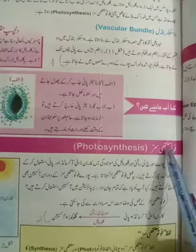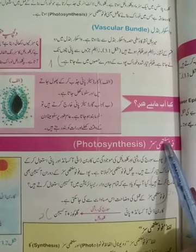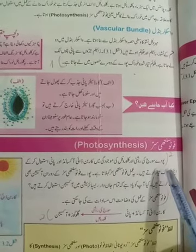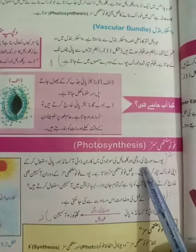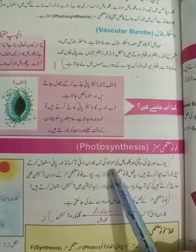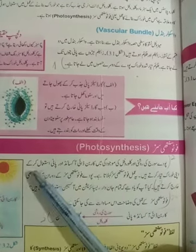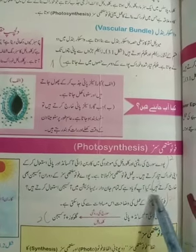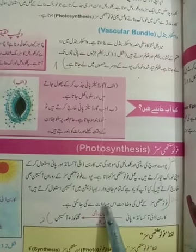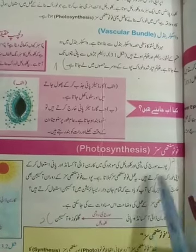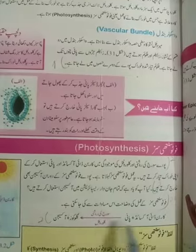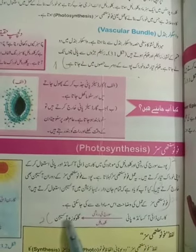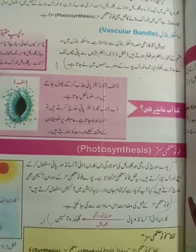آج کے لیسن میں ہم نے دیکھا کہ photosynthesis کیا ہے۔ Photosynthesis وہ عمل ہے جس میں پودے سورج کی روشنی اور chlorophyll کی موجودگی میں کاربن ڈائیکسائیڈ اور پانی استعمال کر کے اپنی خوراک تیار کرتے ہیں۔ اور پھر ہم نے اس کو equation کی صورت میں سمجھا کہ کس طرح سے پودے کاربن ڈائیکسائیڈ اور پانی کو استعمال کرتے ہیں اور گلوکوز اور آکسیجن تیار کرتے ہیں۔